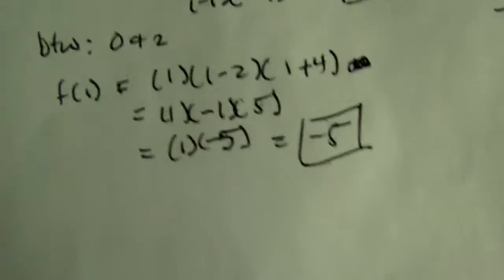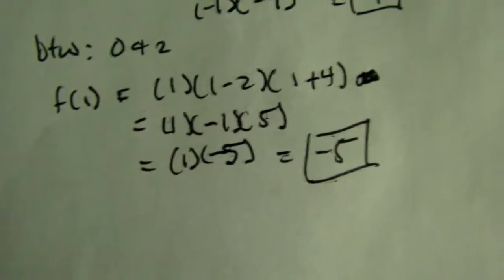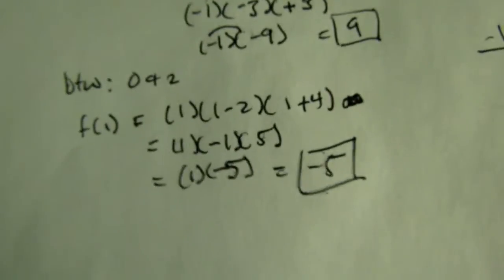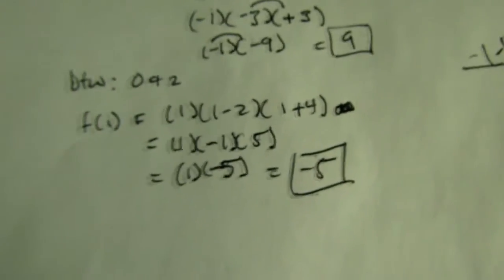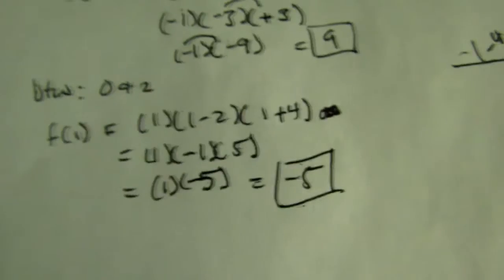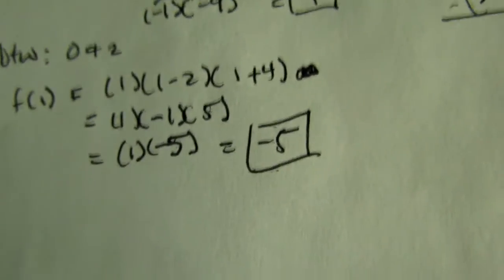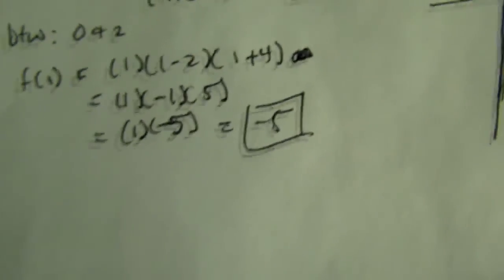Now, we want to do between 0 and 2. So, I picked 1, because this is an easy number to work with. So, plug 1 in for each x, and we get 1 times (1 - 2) times (1 + 4). We get 1 times negative 1 times 5.